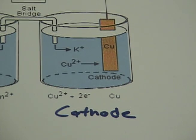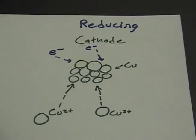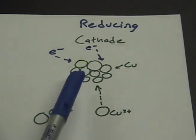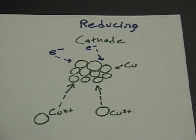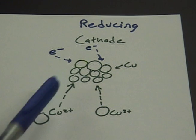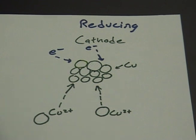When the metal that reduces gains the electrons, it becomes a metal and the metal ions attach to the metal itself. So the copper ions are going into the copper metal, forming more of the metal. The electrons are also going into the solution.